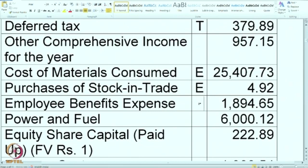Employee benefit expense — again an expense, so mark it as E. The amount is relatively less because it is a large-scale, highly mechanized operation, so employee cost is kept at a lower level. Power and fuel cost — again an expense — is 6,000 crore.